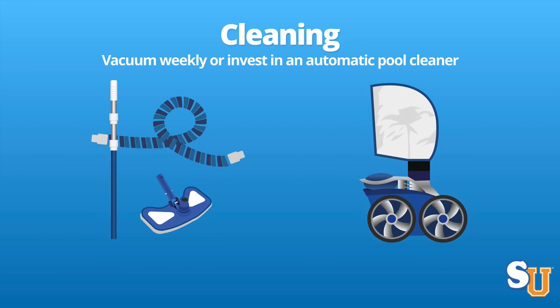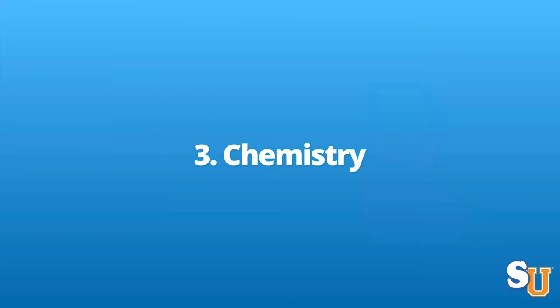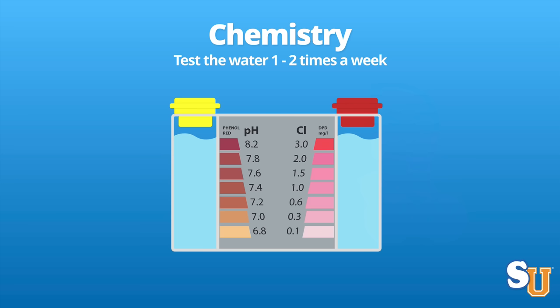I recommend investing in some sort of automatic pool cleaner — whether it's a pressure-side, suction-side, or robotic pool cleaner, which I highly recommend. That way your pool is constantly being vacuumed by a robot instead of you. It's totally worth the investment. Now moving on to chemistry. The first thing you want to do is test the water one to two times a week. You can use a home test kit, test strips, or take it to your local pool dealership. Do this often — the more often you do it, the better you'll stay on top of your water chemistry.